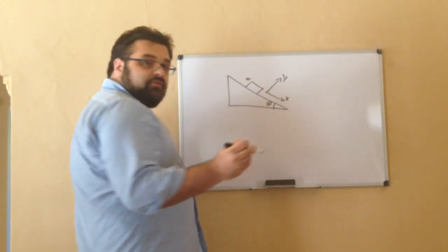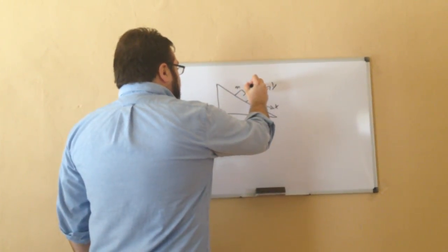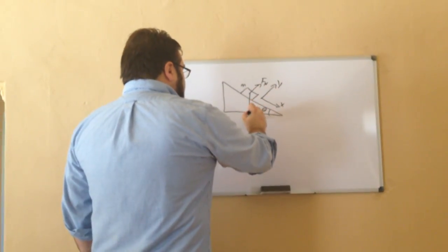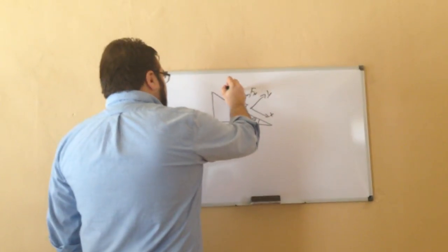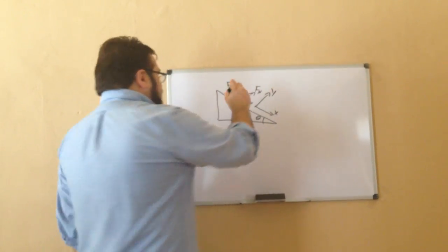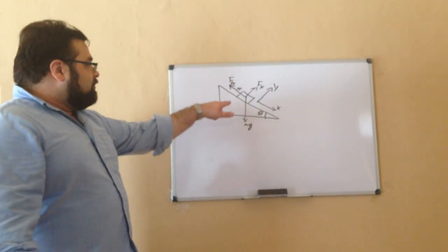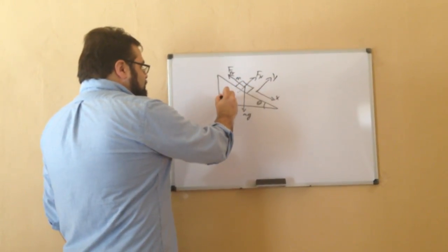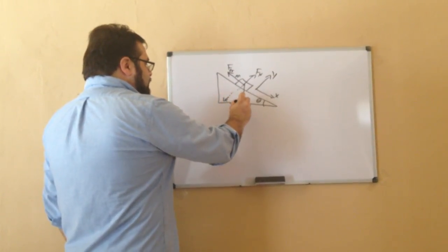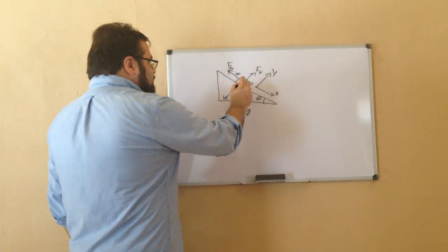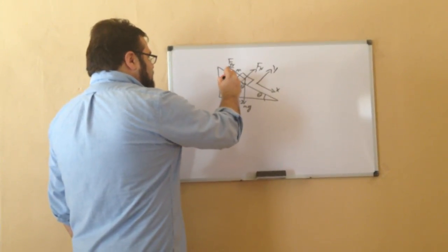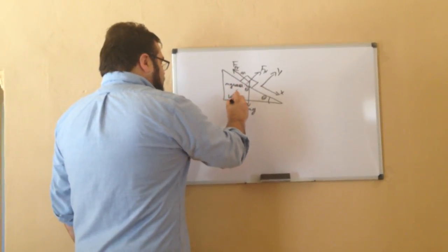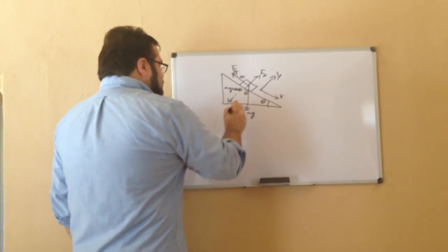So if we do the free body diagram for the system, we've got the normal force of the inclined plane pushing up, we've got gravity going down, and friction should be going upwards to prevent the block from going downwards. In this setup here, I have to decompose the gravity force into its two components. Using a little trig, you can see that this is theta, which means that this component is mg cosine theta, and this component is mg sine theta.